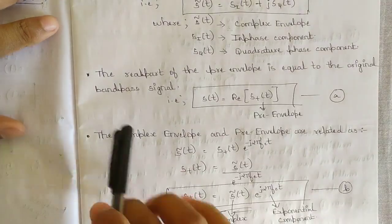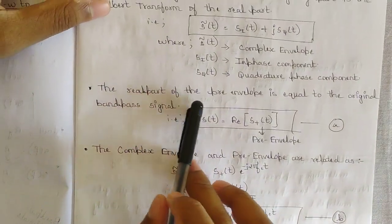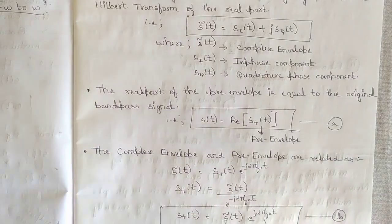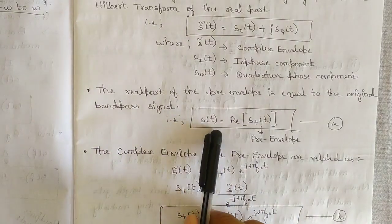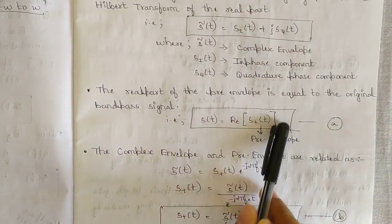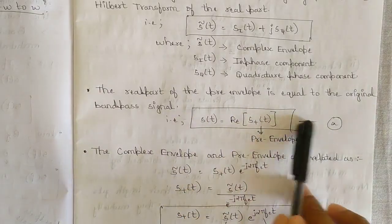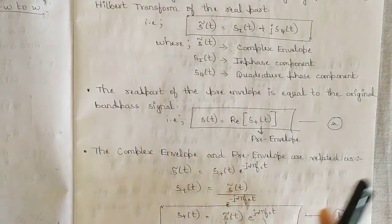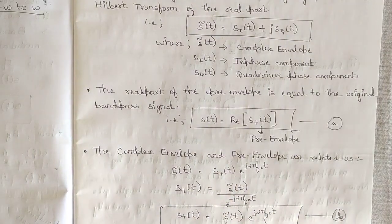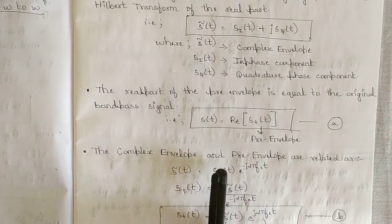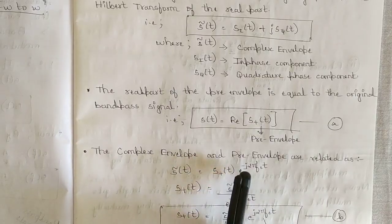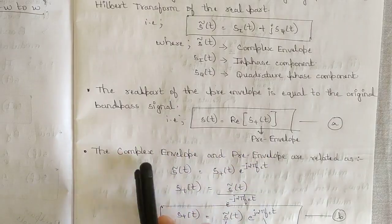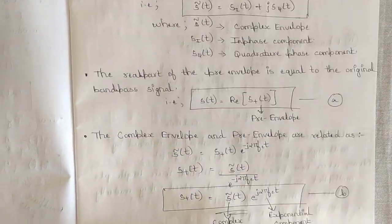The real part of the pre-envelope equals the original band pass signal: s(t) = Re[s⁺(t)] — call this equation A. The complex envelope and pre-envelope are related as: s̃(t) = s⁺(t)·e^(−j2πf_c·t). This is the relationship between the complex and pre-envelope — remember this equation.